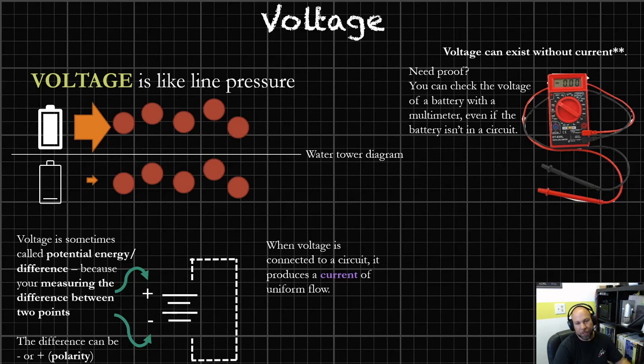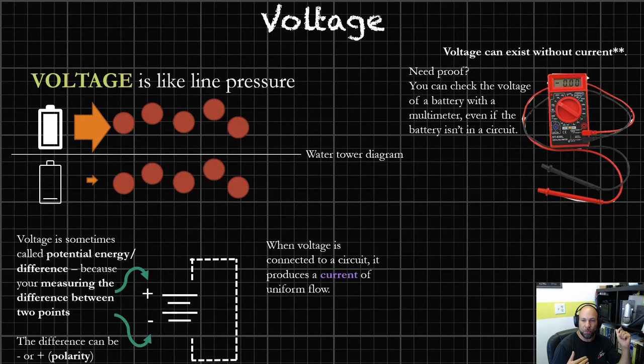Voltage is also known as potential energy or potential difference, because you're measuring the two different sides of the battery — trying to describe how much more energy one side of the system has in comparison to the destination where the charge carriers are rushing to. When voltage is connected to a circuit and starts to push charge carriers through a wire, that's when we start to produce what's known as current.